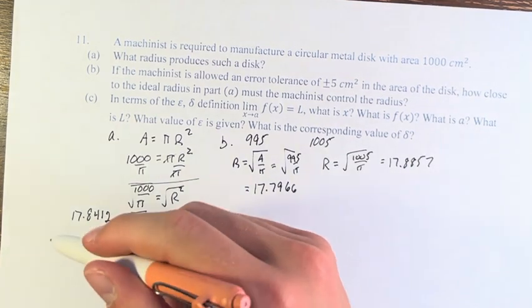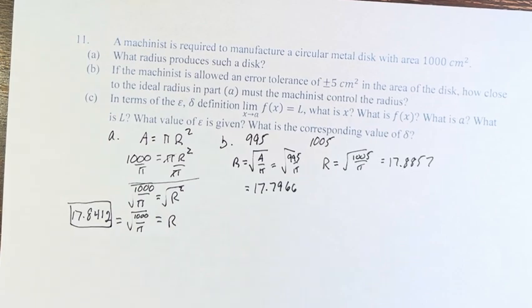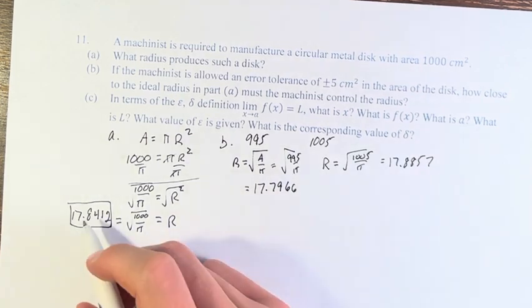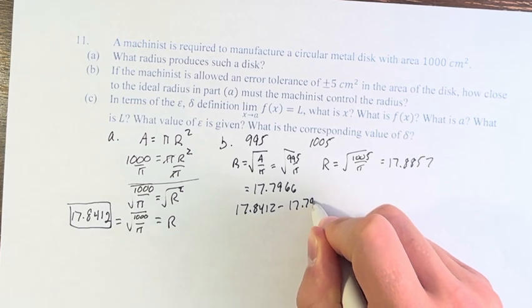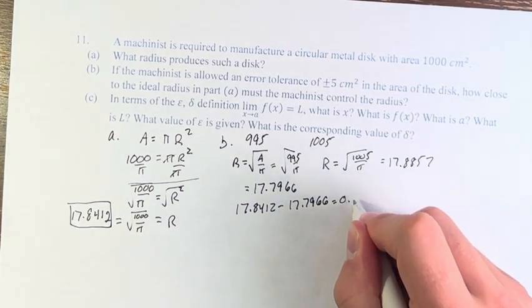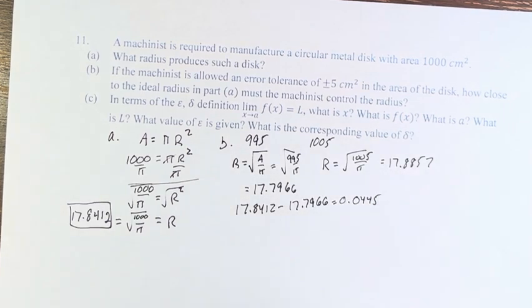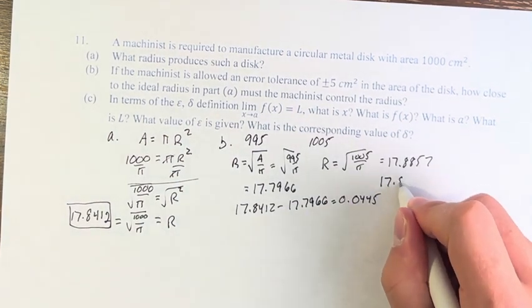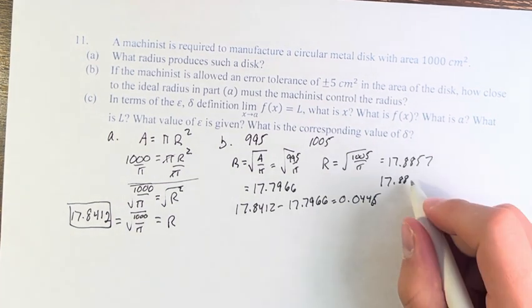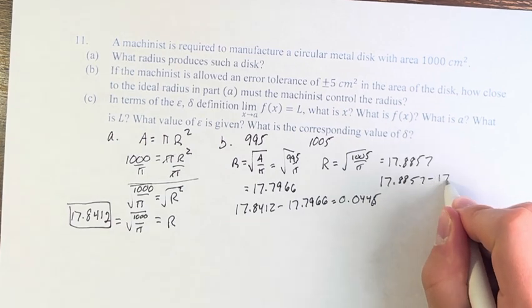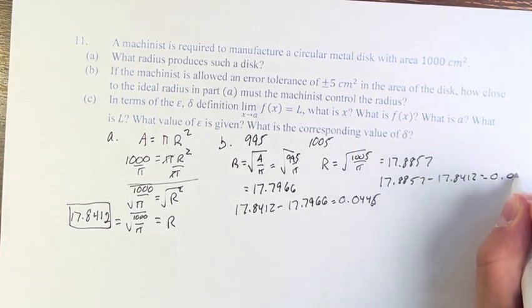So, this is our original radius. And we're asked how close to this radius are these two. So, if we take the difference between the original radius and the lower radius, we get 0.0445. And with the upper radius, sorry, this is 0.446. And this is 0.0445.